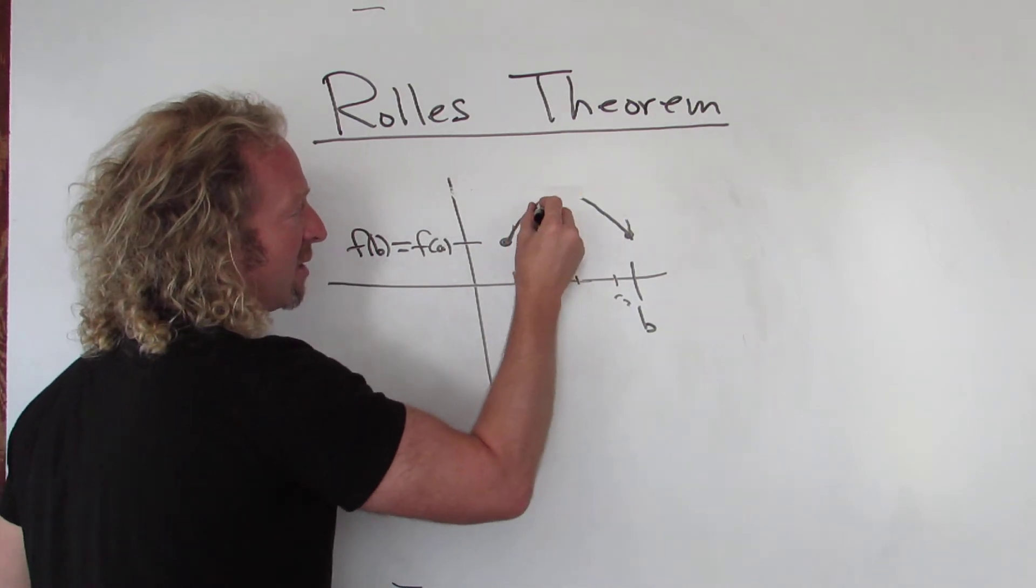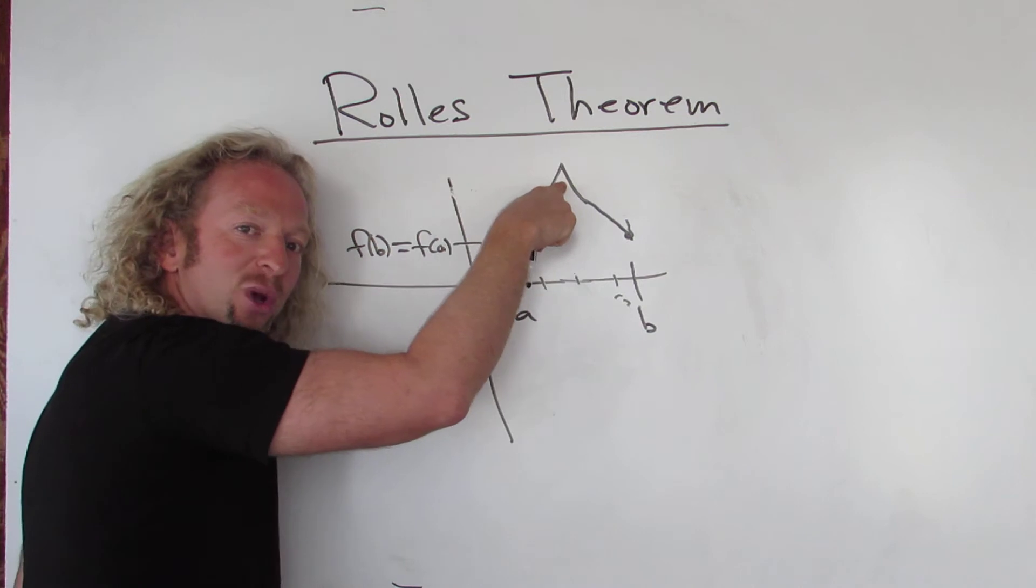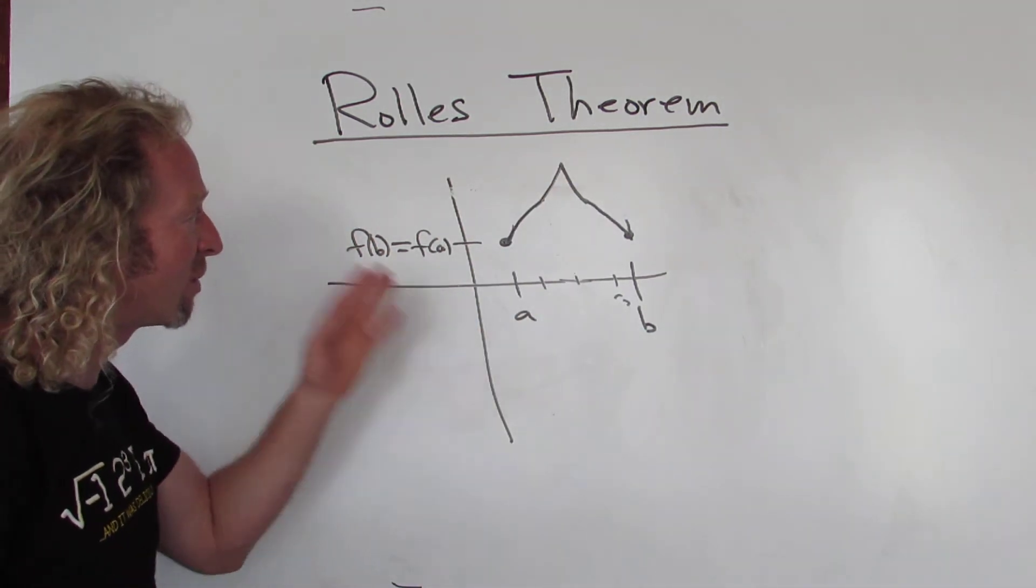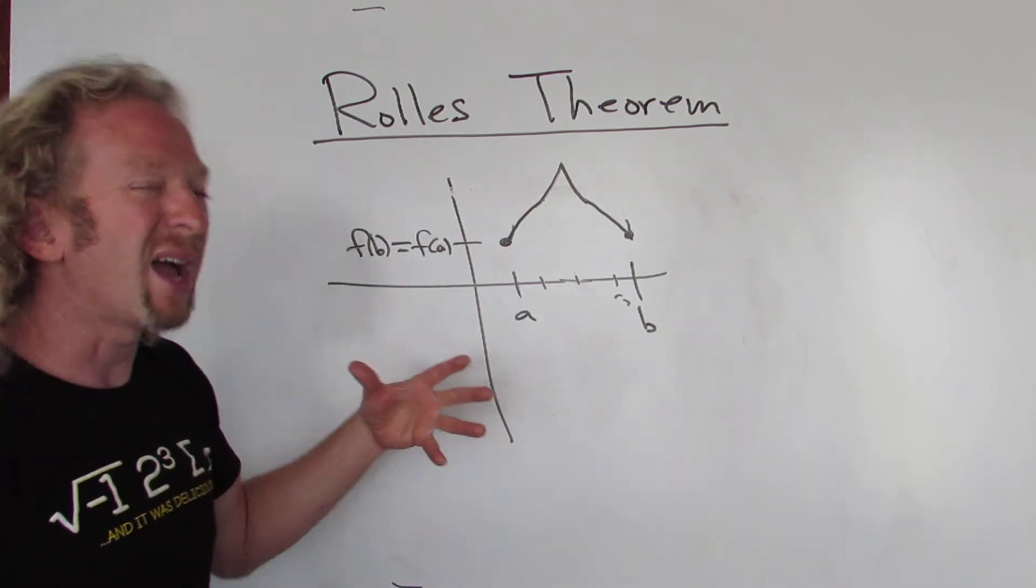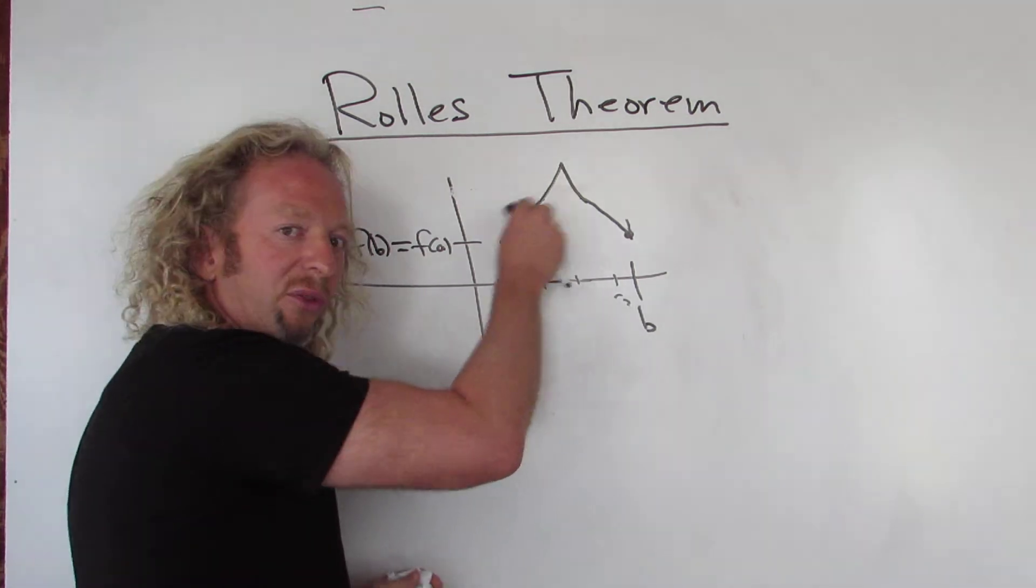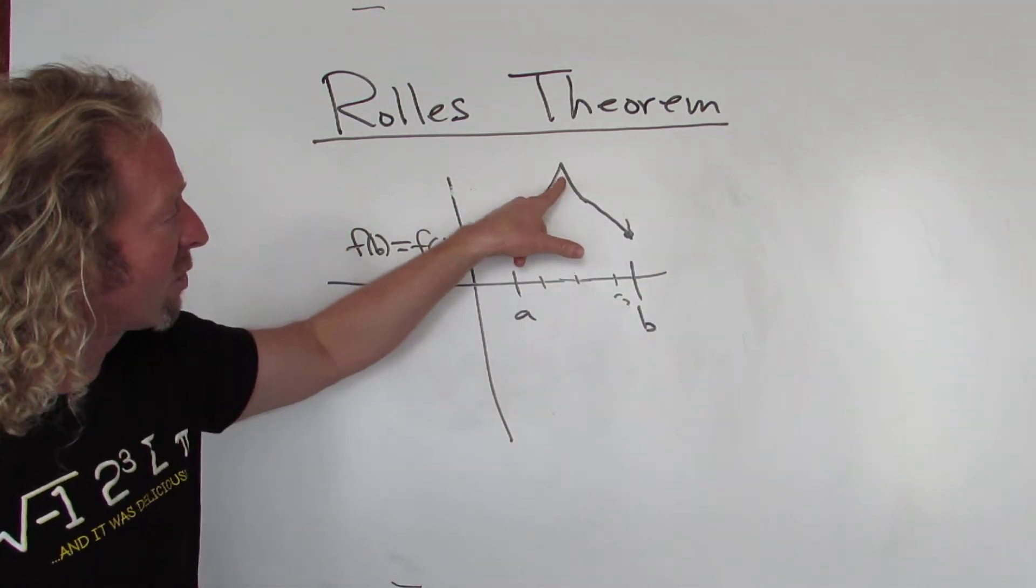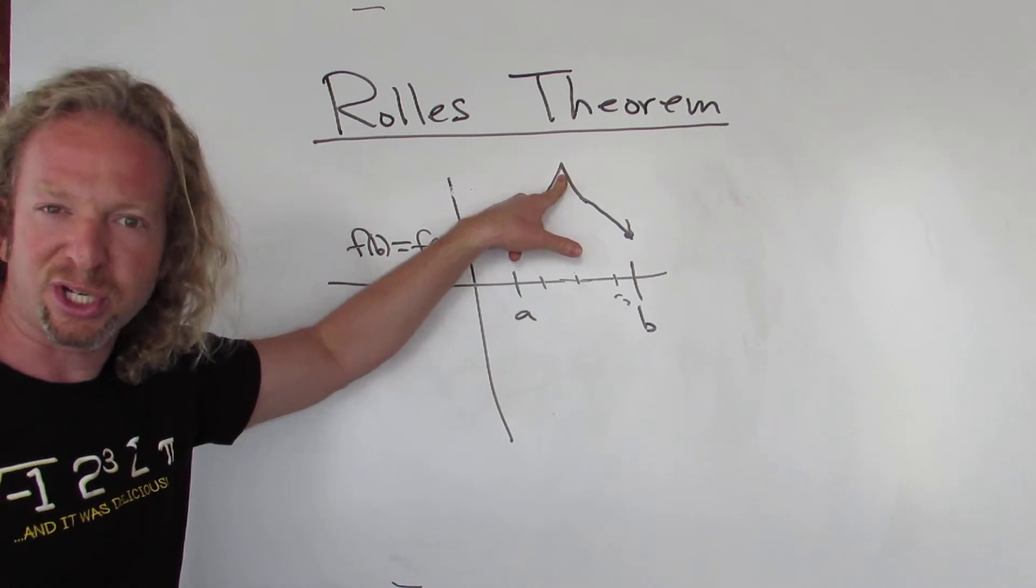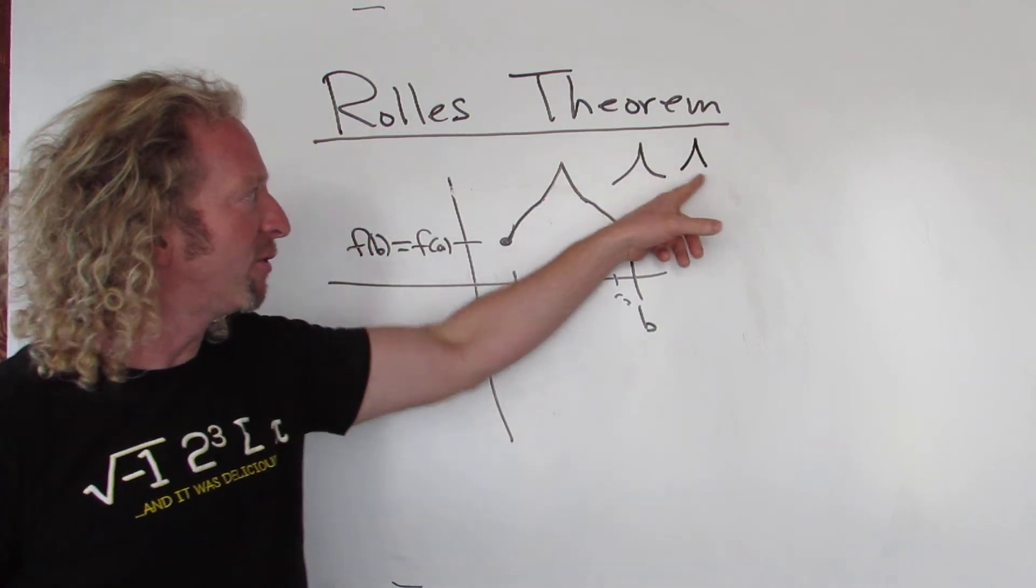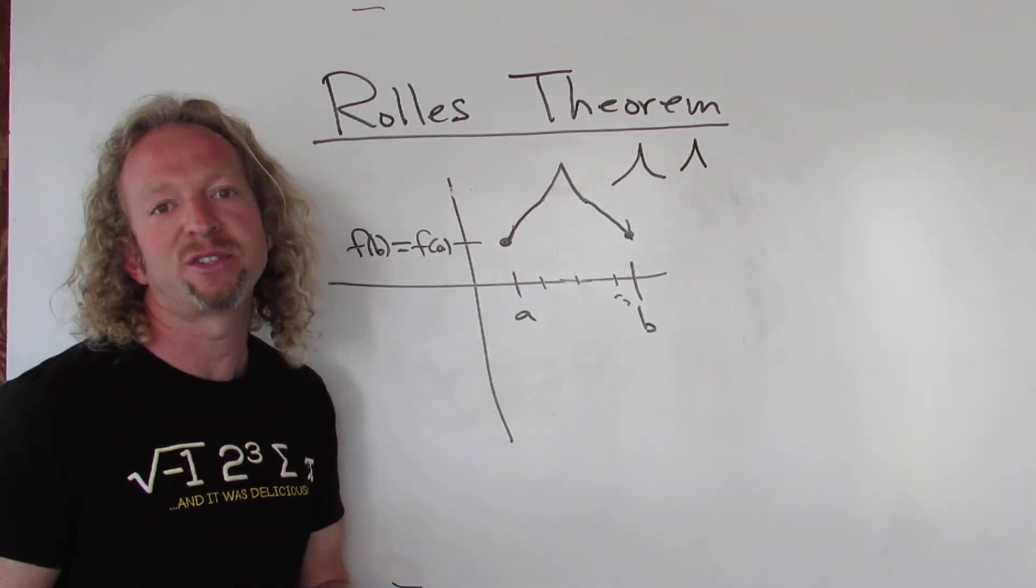So another way to try to break the theorem is to do something like this, have a sharp edge. In this case, the derivative would be undefined. However, we can't do that either because Rolle's Theorem requires differentiability. So now you see why the theorem has those conditions, right? It requires continuity because otherwise you could put a little hole there and the theorem wouldn't work. And it requires differentiability because otherwise you can make little sharp edges like this or cusps. Remember, this is called a cusp. That's just a sharp edge. And in both of these cases, the function is not differentiable. But we can't do that because Rolle's Theorem requires differentiability.